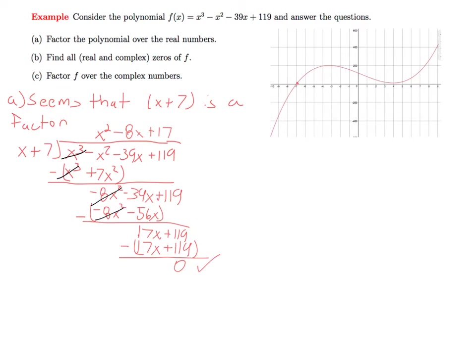At this point, we have that f of x is equal to the factor x plus 7 times the quotient that we just found, which was x squared minus 8x plus 17.